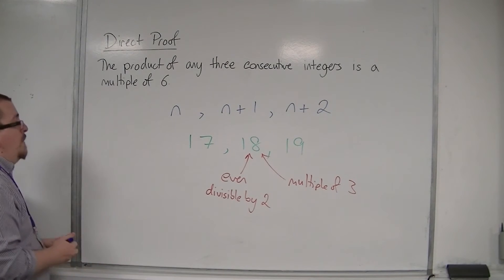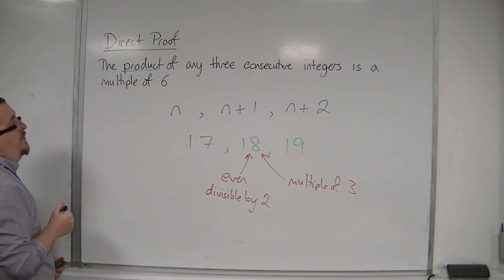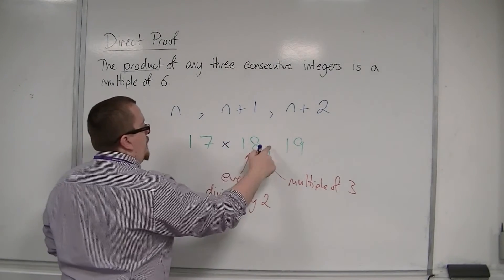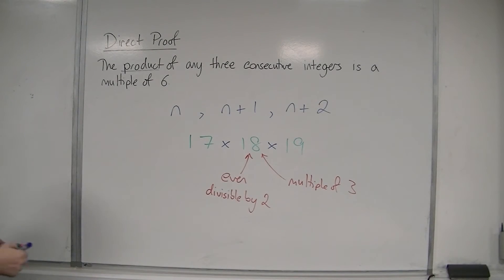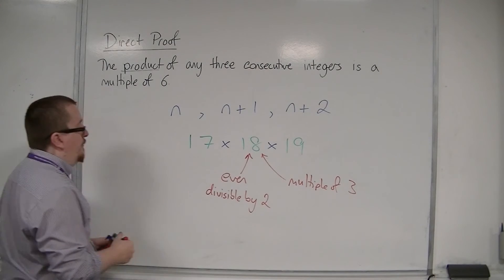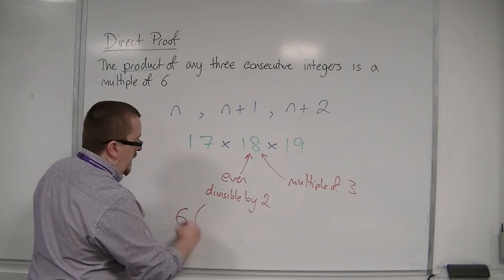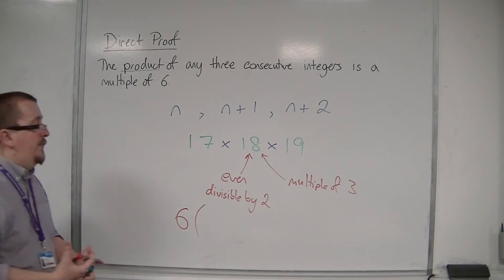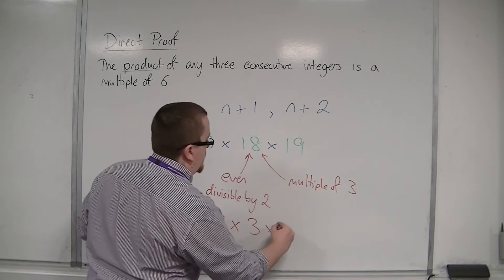So, I'm multiplying these numbers together, because we're looking at the product of these three consecutive integers. So, if I'm multiplying these together, then that means that I can take out a factor of two and a factor of three. And so, I can take a factor of six out, and I would have 17 times three times 19.